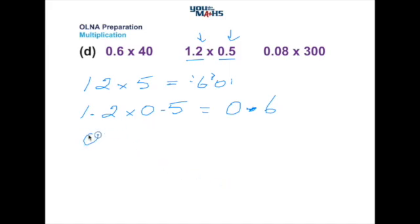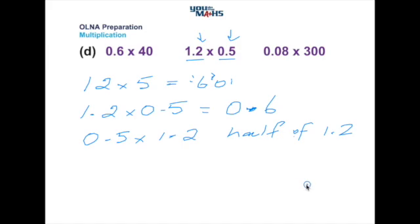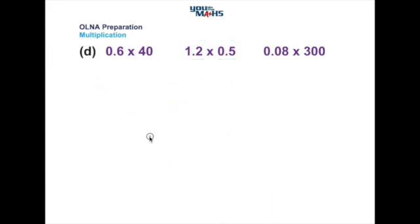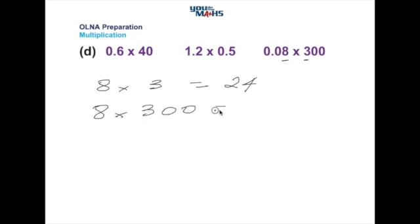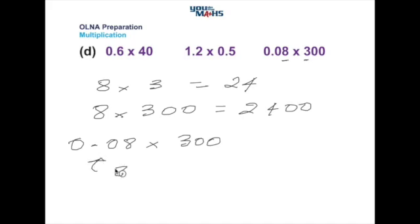Another way to see this: 0.5 multiplied by 1.2. We know 0.5 is a half, so we're working out half of 1.2, which equals 0.6. In the next example, 8 multiplied by 3 is 24. Extending 3 to become 300 gives two extra zeros, making the answer 2400. Multiplying by 0.08 means multiplying by 8 over 100 — dividing by 100 is two places — so moving the decimal point in 2400 two places to the left gives a final answer of 24.